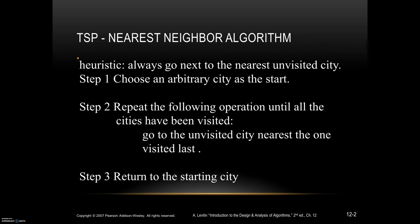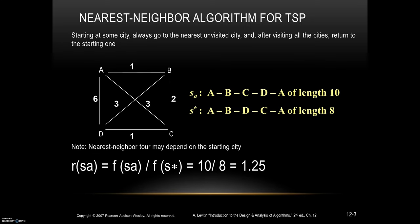Now we will see how to find the approximate solution for the traveling salesman problem using the nearest neighbor algorithm. The heuristic is: always go next to the nearest unvisited city. In the first step, choose an arbitrary city as the start, then repeatedly go to the unvisited city nearest to the one visited last, until all cities are visited. Finally, return to the starting city.